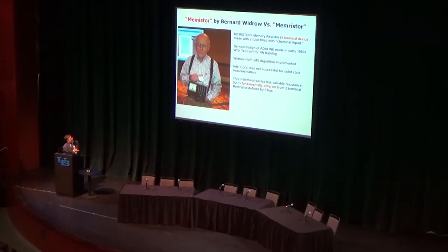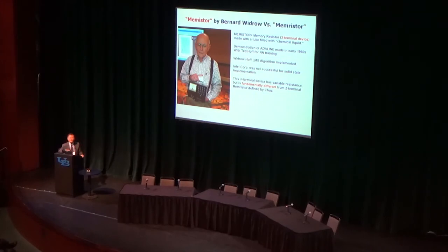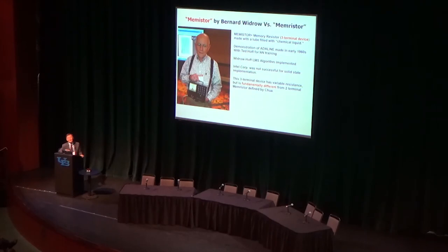He made it with his PhD student CATHOF. They had the Adaline device doing some optimization. At that time a few devices went bad, but it was still functioning very well for the optimization problem. CATHOF joined Intel to make a solid-state memistor but couldn't make it, and was then moved to develop microprocessor chips. That three-terminal chemical tube memistor is different from Leon Chua's two-terminal memristor, but it's a similar concept. Interestingly, he called it memory resistor as well as memistor, and Leon called it memristor.